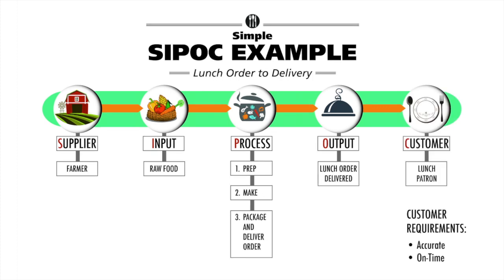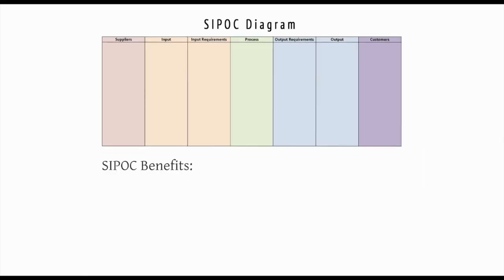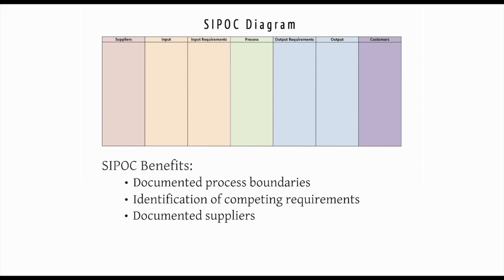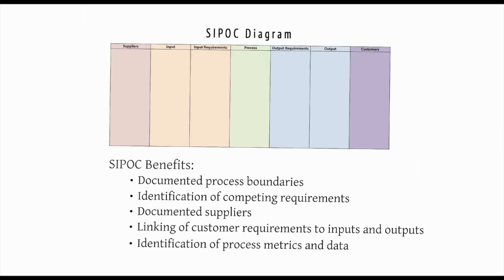A SIPOC is a tool that helps document a high-level process from the suppliers to customers. The benefits to using a SIPOC diagram include documented process boundaries, identification of competing customer requirements, documented suppliers, linking of customer requirements to inputs and outputs, and identification of process metrics and data.